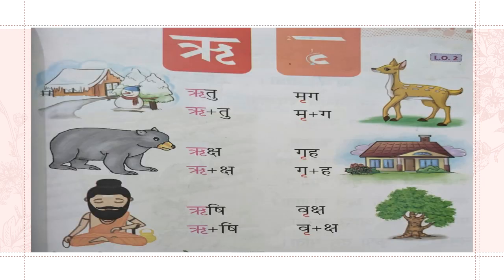These are Ri Matra words. Let's read them together: Ritu, Mrig, Riksha, Grih, Rishi, Vriksha. Similarly, we can find a few other words in your textbook. Please read them and understand the Ri Matra.